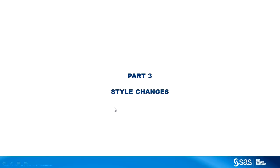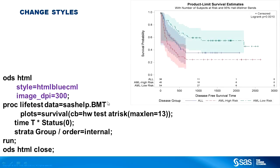Finally, let's look at some style changes. The style we've been using is called HTMLBlue — it's an all-color style, so groups are differentiated only by color. If I want lines differentiated by line type, I could use HTMLBlueCML, where CML stands for colors, markers, and lines — and now I see different line styles. I specify a style using the style equals option on an ODS destination statement, such as HTML. I also illustrate the DPI option — dots per inch — creating the graph at 300 DPI, which makes a cleaner looking graph than the default of 100, though it also makes a bigger graph.